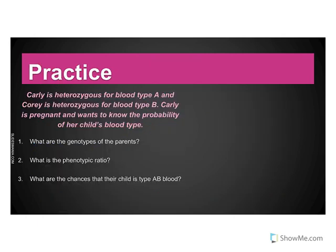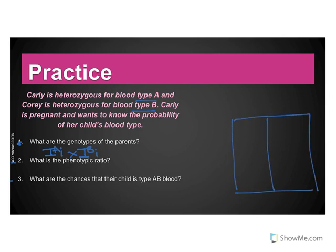For our first practice problem, we're going to look at two individuals that are both heterozygous. Carly is heterozygous for blood type A, and Corey is heterozygous for blood type B. Carly is pregnant and wants to know the probability of her child's blood type. Carly's genotype is capital I superscript A and lowercase i, and Corey's is capital I superscript B and lowercase i. These will be basic four-square Punnett squares.